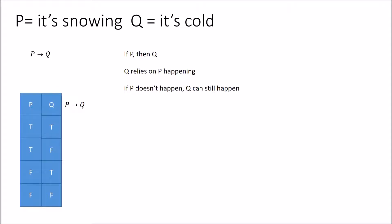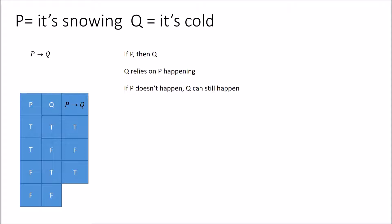Let's draw a truth table for if P then Q. If they're both true, this holds up as true. However, if it's snowing and it's not cold, that doesn't make any sense — that's false. If it's not snowing but it's still cold, that makes sense. And if neither of them are happening, that can also make sense. The only condition where it doesn't hold is the second row where it's snowing but not cold.